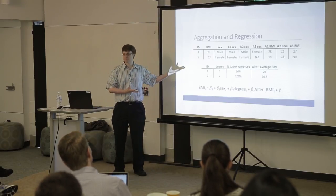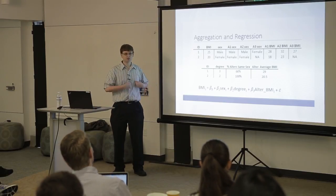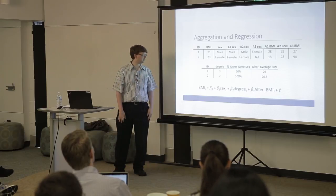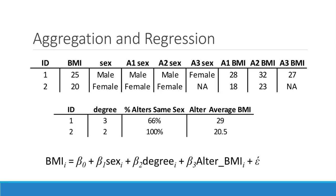When you have these different observations, you can do a basic linear regression with ego network data. For example, a person's BMI equals some baseline plus their sex, plus the number of friends they have, plus the average alters' BMI, plus an error term.